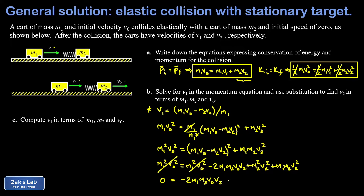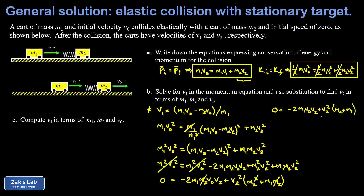Cleaning up: factor v2-squared out of the last two terms, leaving v2-squared times (m2-squared plus m1*m2). Since every term has a factor of m2, divide through by m2, giving: zero equals negative 2*m1*v_naught*v2 plus v2-squared times (m2 plus m1). This is a factorable quadratic in v2; factor out one v2, leaving: v2 times (negative 2*m1*v_naught plus v2*(m1 plus m2)) equals zero.